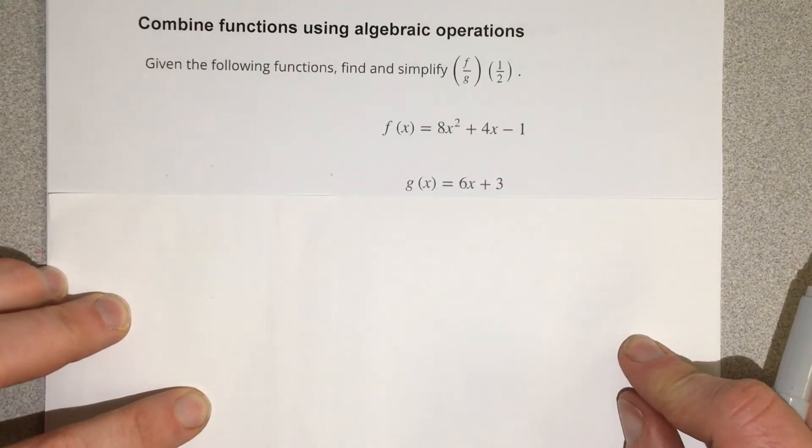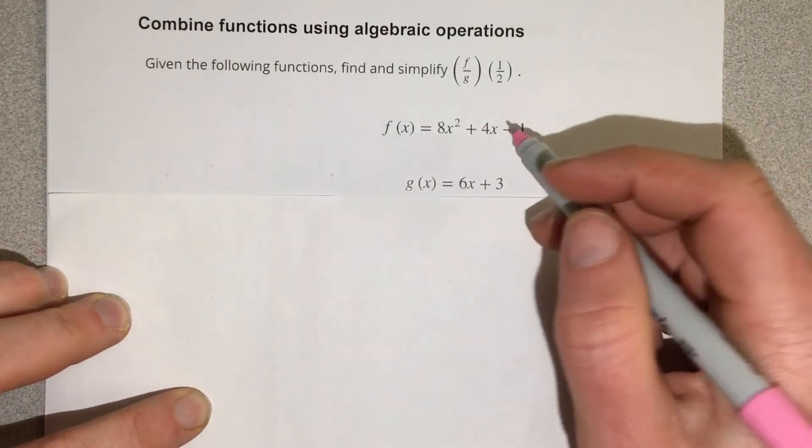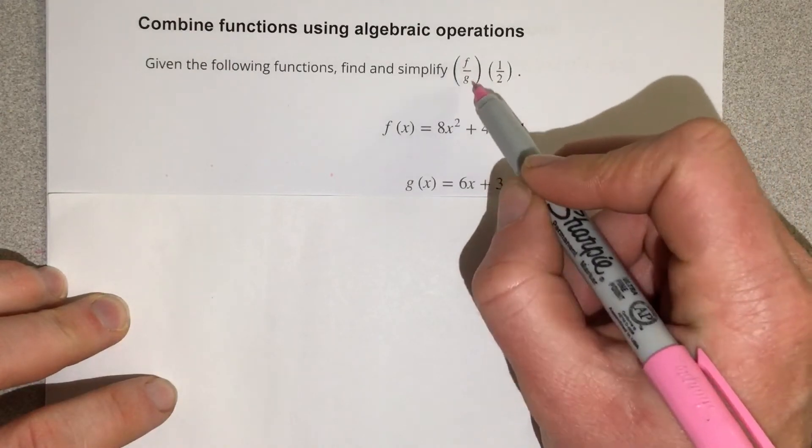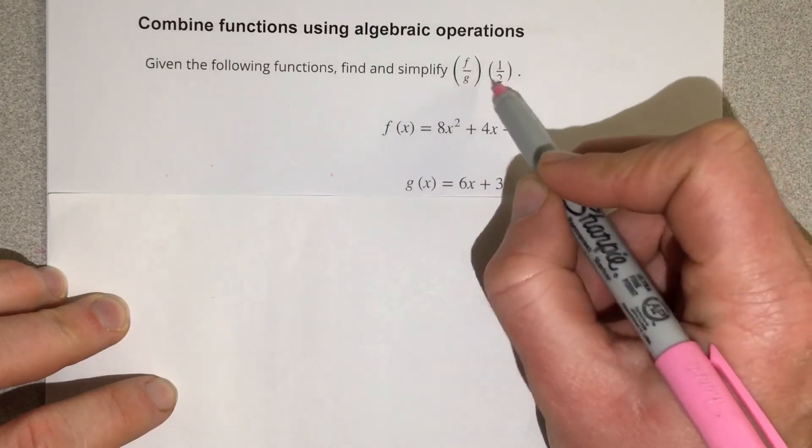In this video, we're going to combine functions using algebraic operations. The operation we're going to use here is we're going to divide the f function and the g function, and then we're going to input a half.